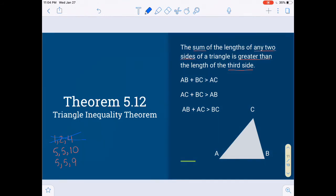The next one, 5, 5, and 10. You can take the 5 and the 10 here, or the 5 and the 10 here, and that's 15, and that's bigger than the other 5. But if you take these two, 5 plus 5 is 10. But the theorem says it has to be greater than 10. And so that combo won't work either.